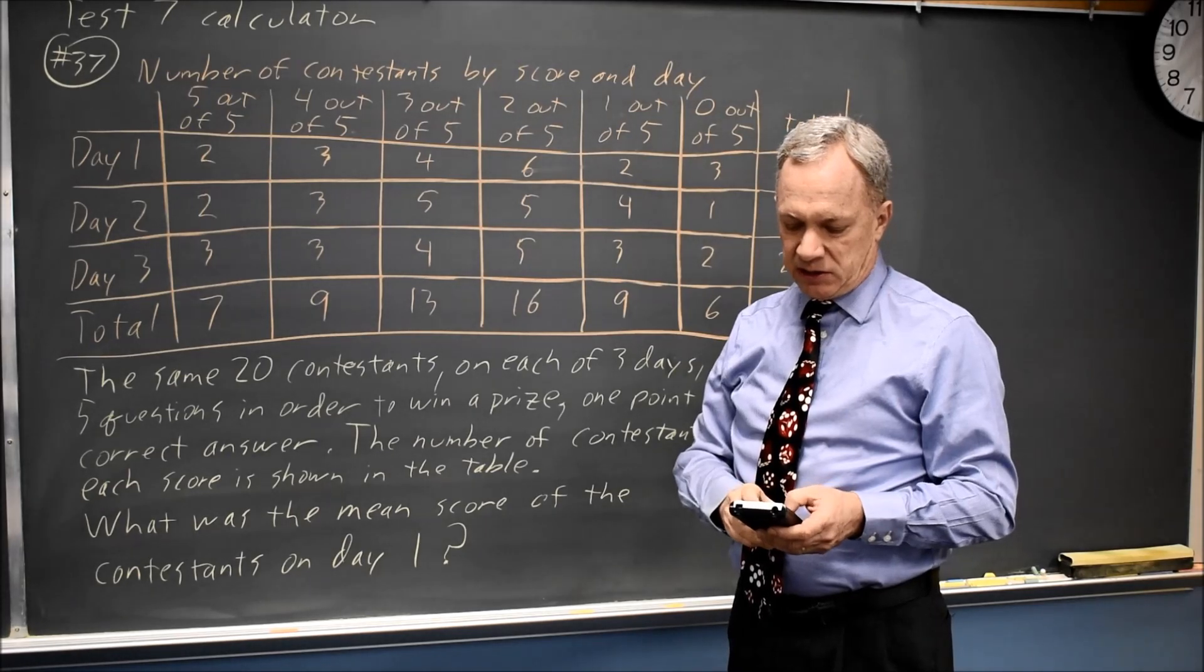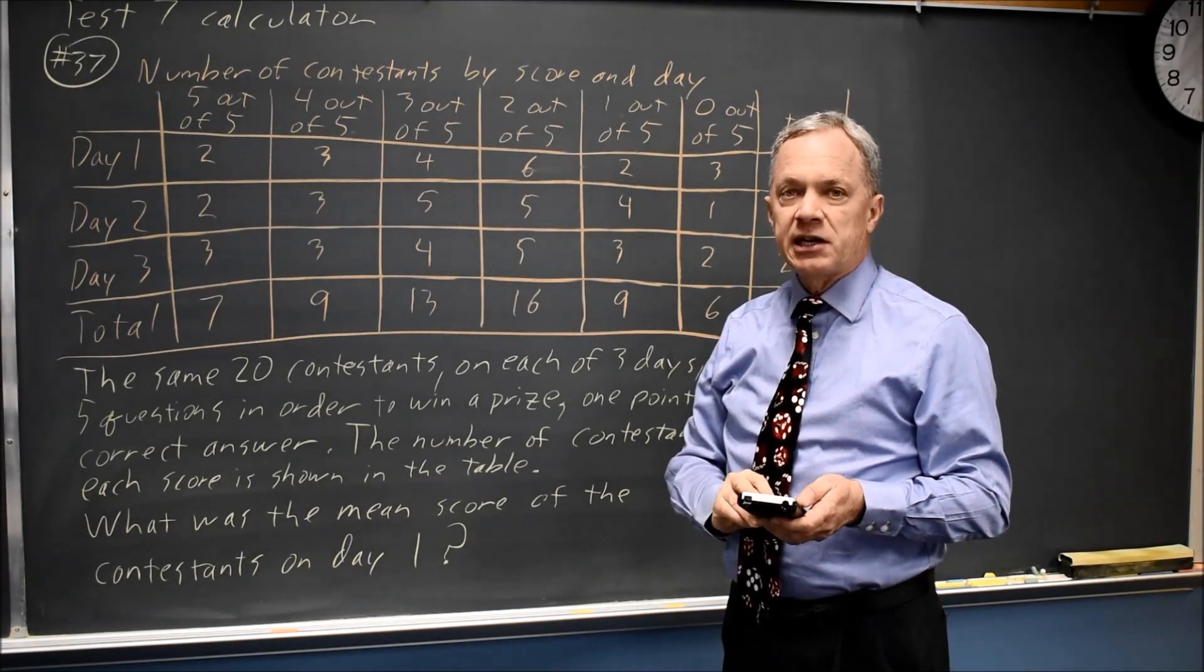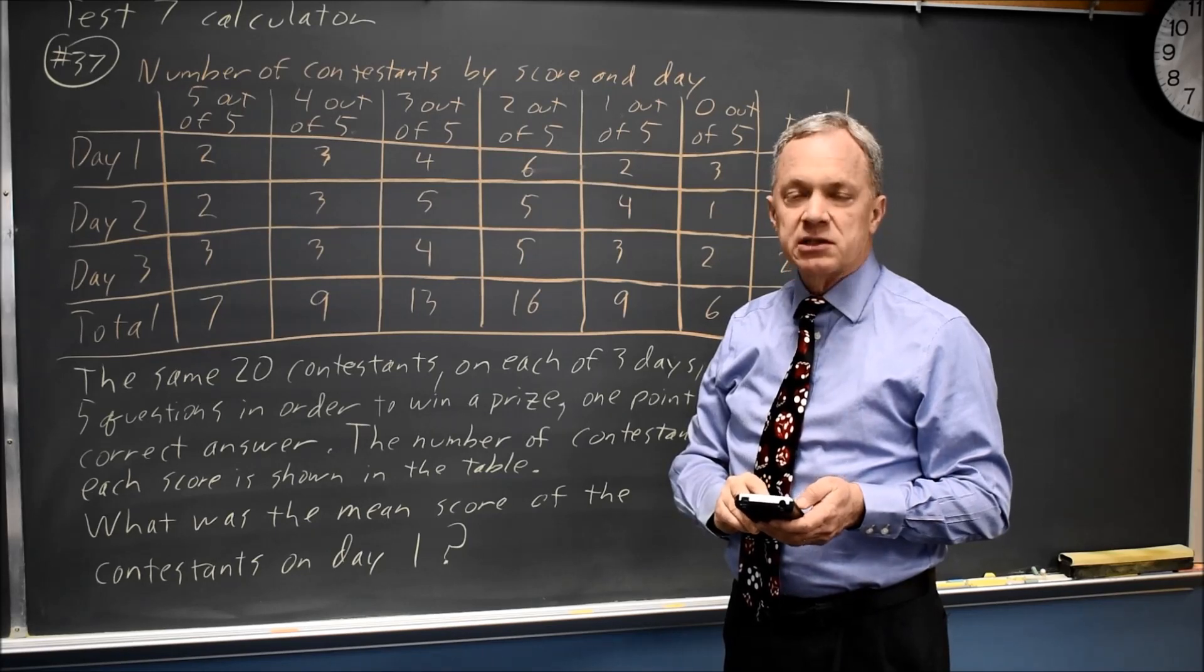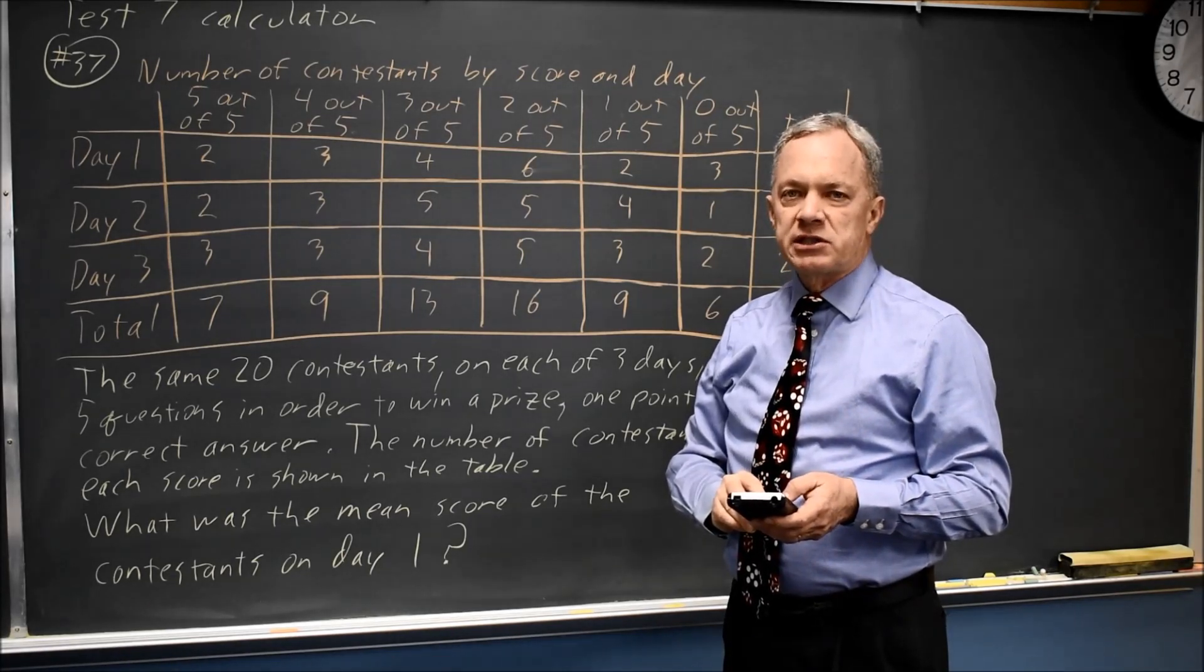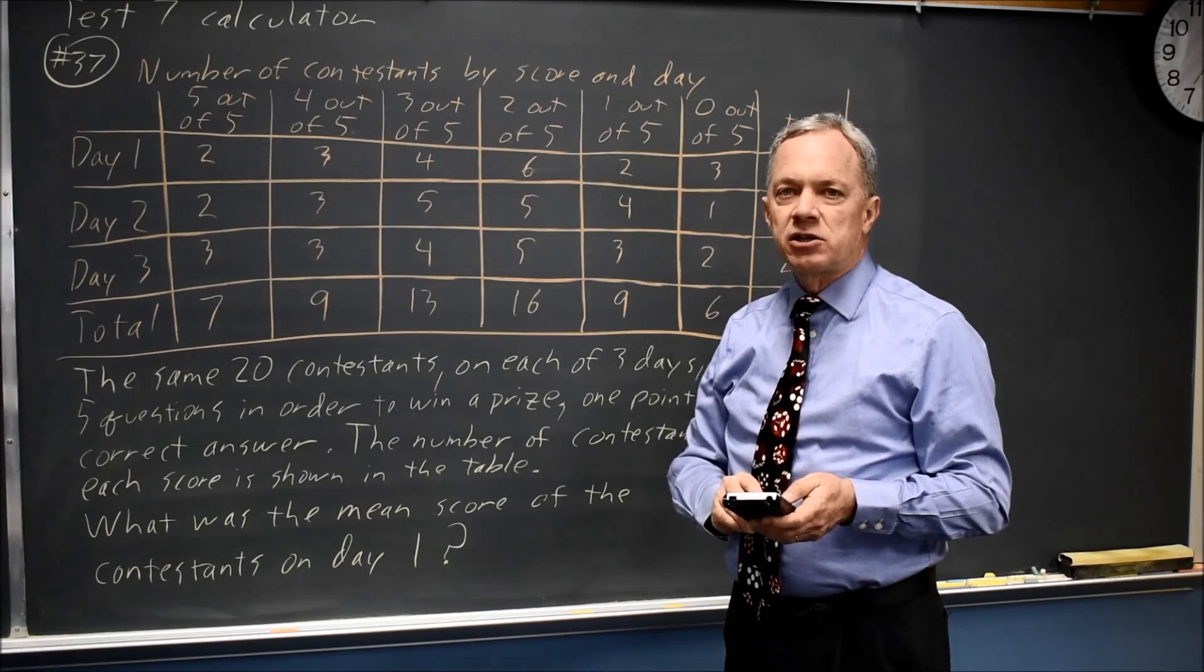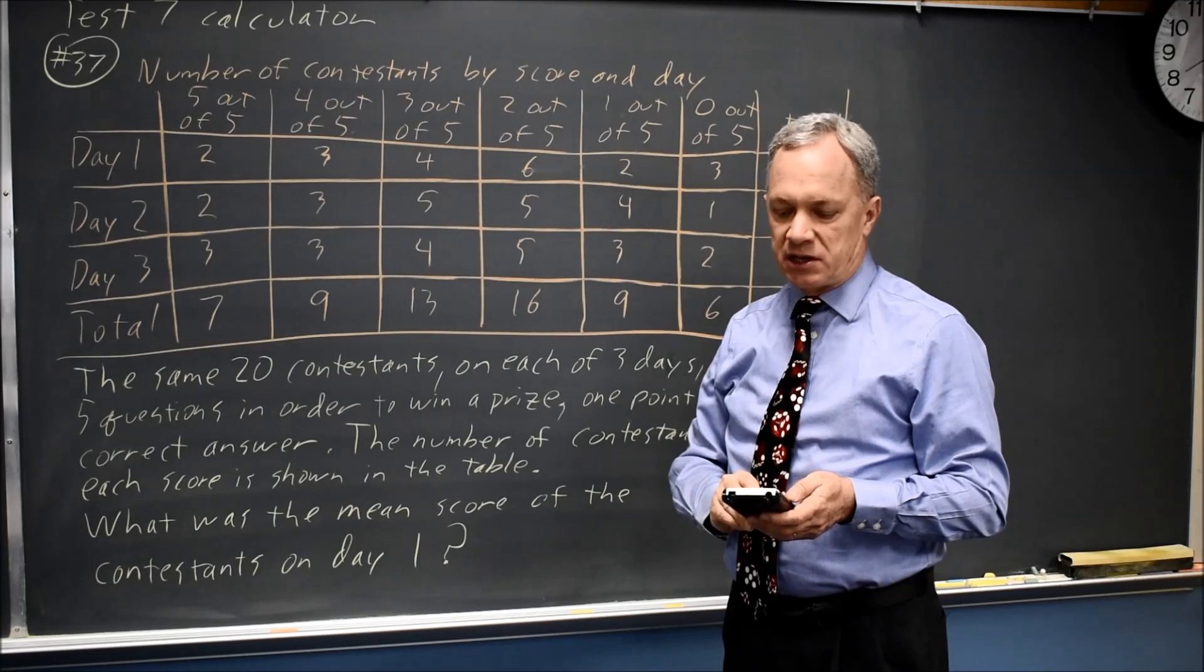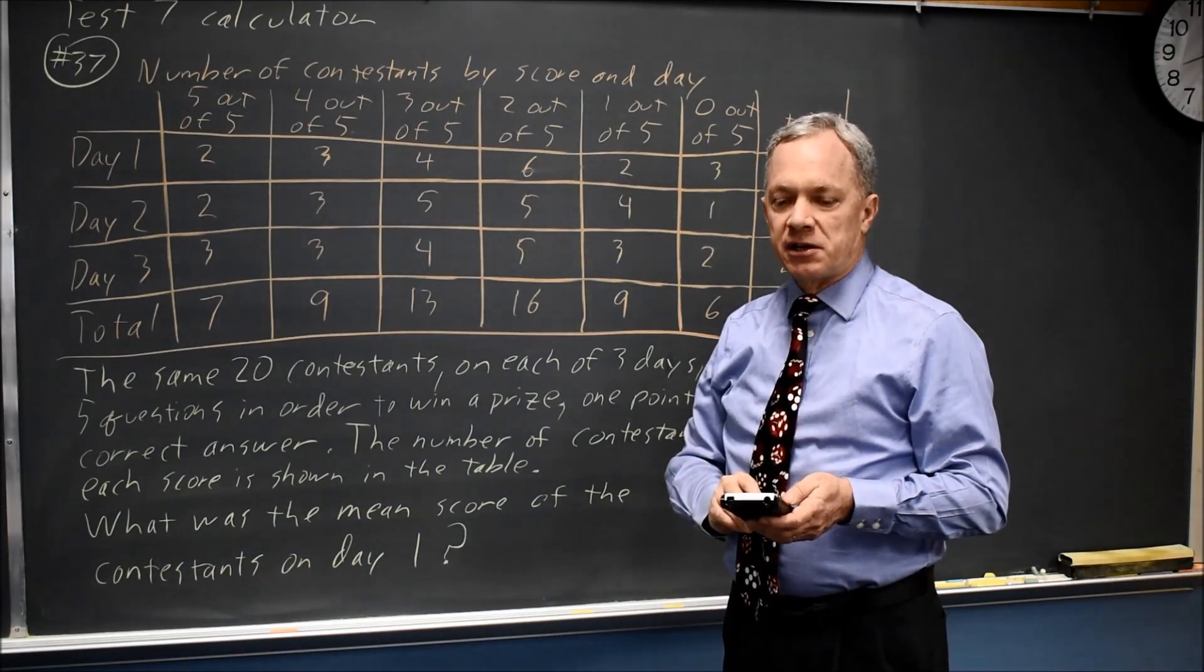Once I have those entered, I can go to stat, arrow right to calculate, and hit enter for one variable statistics. Second one puts L1 in list if it's not already there. Second two puts L2 in frequency list if it's not there. Go down to calculate and hit enter.